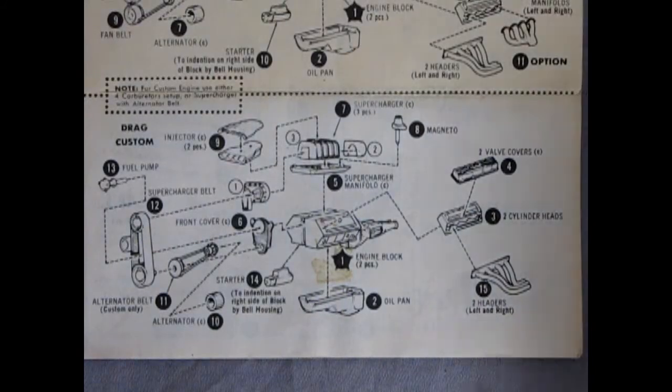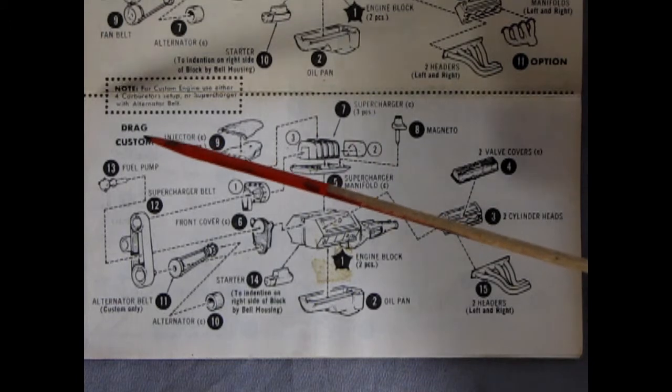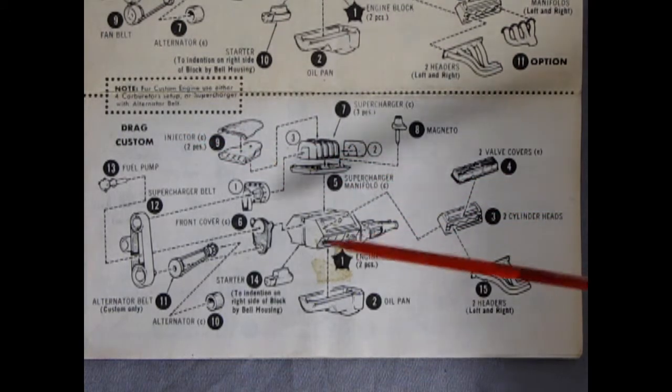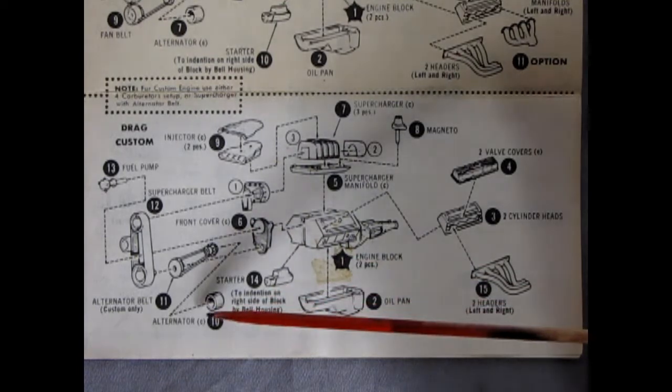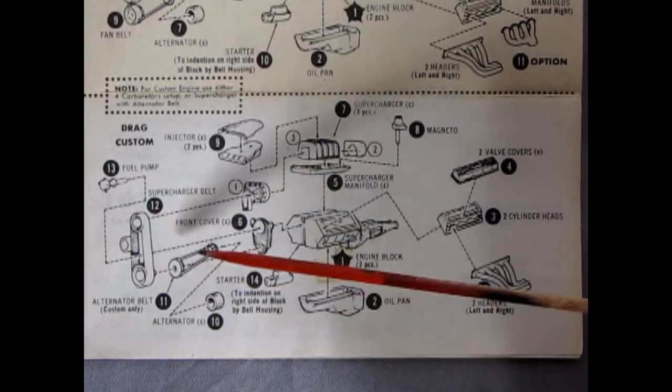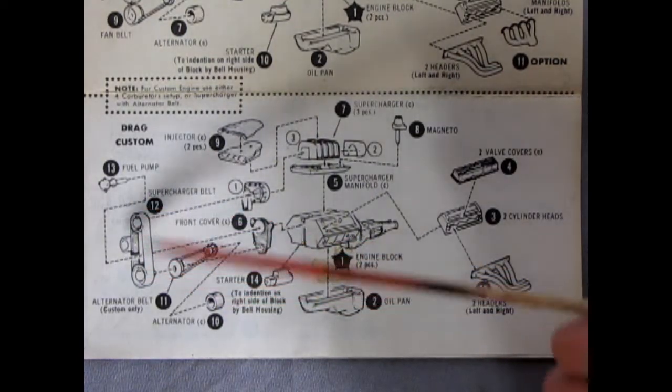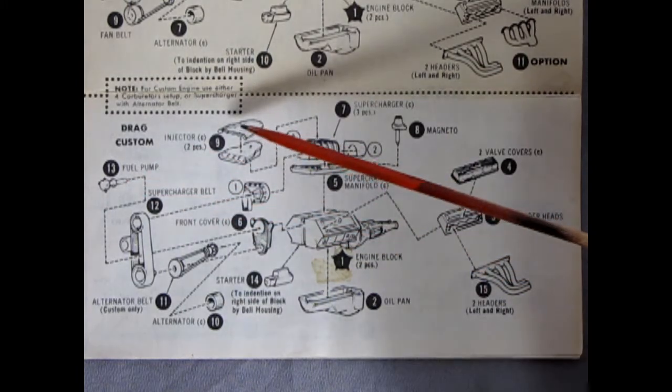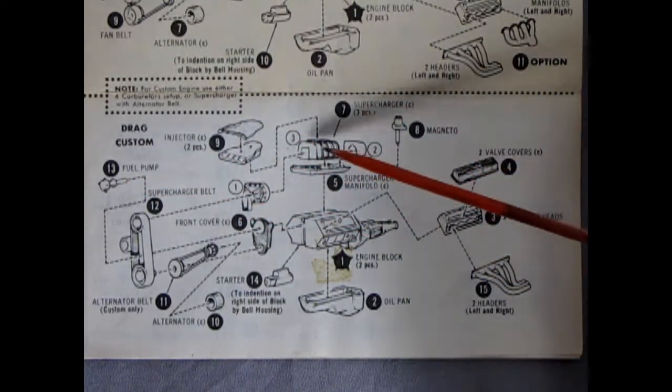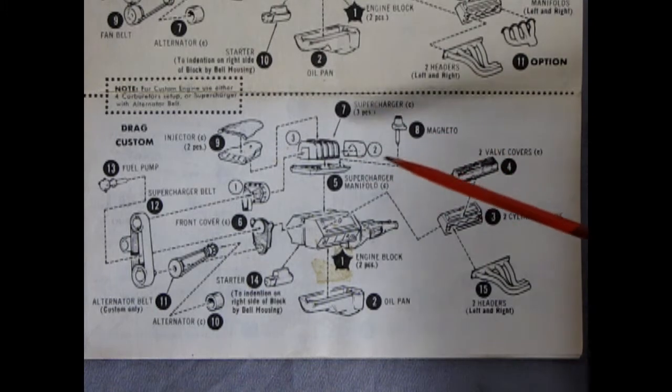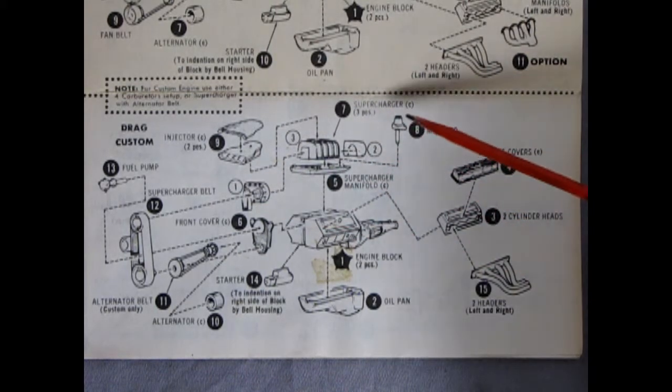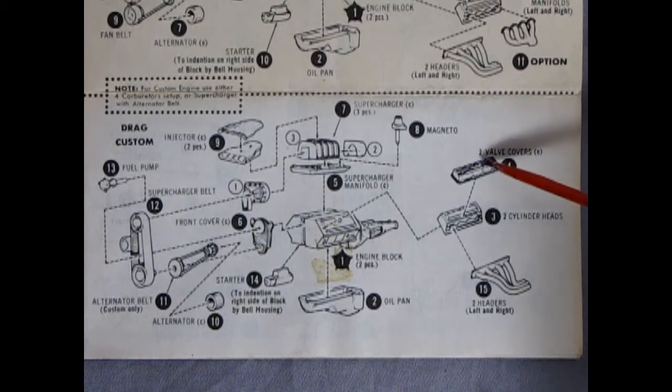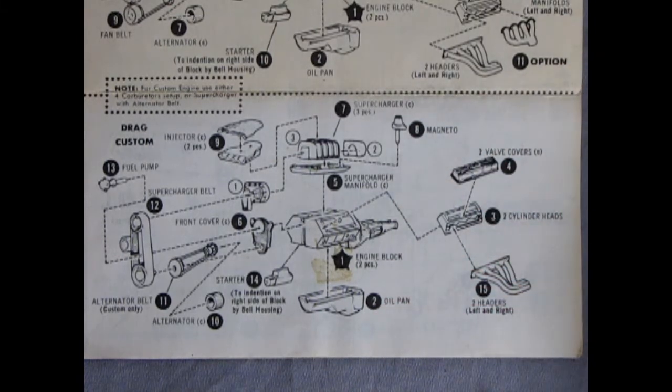And if that wasn't enough here is the drag and alternate custom version. Again with our engine block right and left. A chrome front cover, starter motor, alternator, the extended belt, the supercharger belt, the fuel pump, the injector top and bottom, the supercharger itself, the intake manifold, the back cover for the supercharger, the front cover for the supercharger, a magneto, valve covers, chrome ones, and cylinder head, oil pan, and exhaust headers.